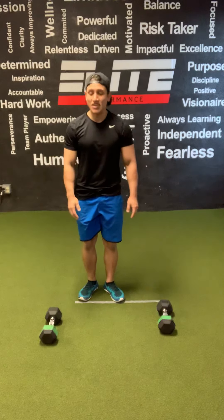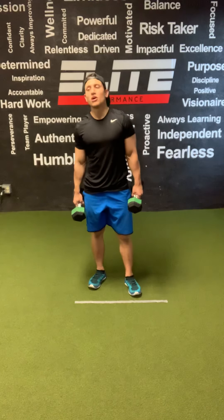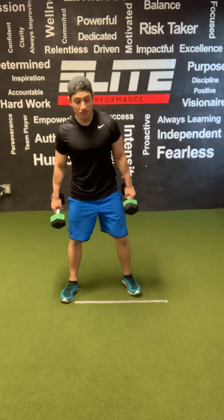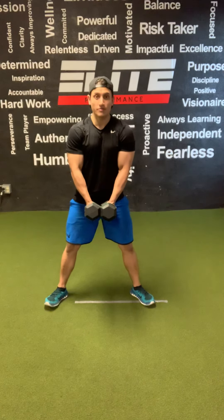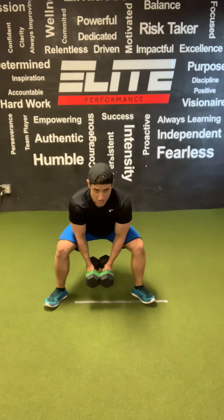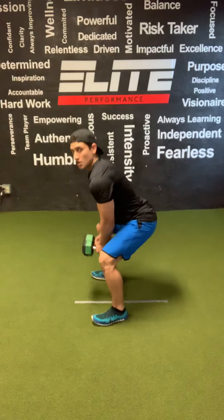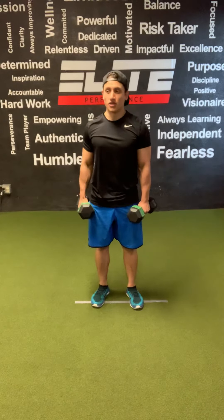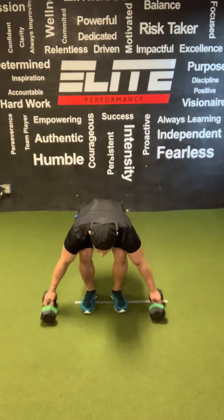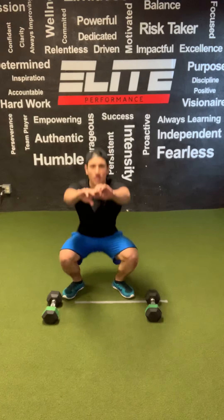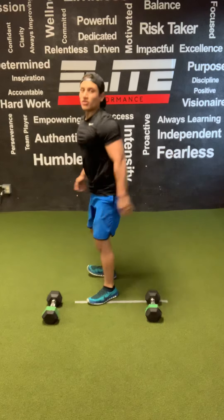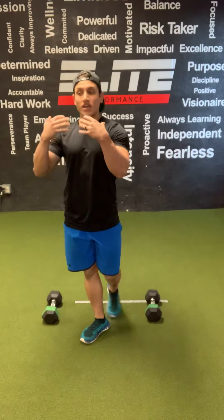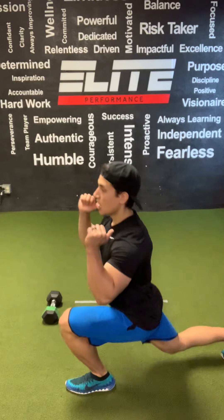For every even minute: 12 sumo dumbbell high pulls to 20 air squats. Feet out wide, toes pointed outward, squeeze the dumbbells together close to the inside of your thighs. Squat, then pull — elbows higher than your wrists for that high pull. That's working your traps and rear delts. 12 of those, then 20 air squats — chest up, all the way down, hands out in front. 8 minutes on the clock — 10 reverse lunges to press, 30 bicycles for odd minutes; 12 sumo high pulls to 20 air squats for even.